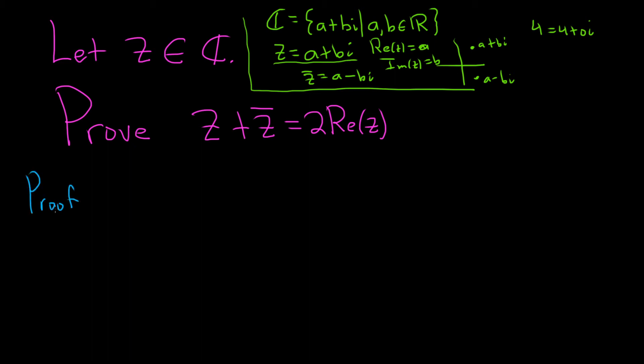So proof. So let z be a complex number. It's an element in the set of complex numbers. That's what that notation means. And so this means that z is equal to a plus bi. So this means z equals a plus bi, where a and b are real numbers.